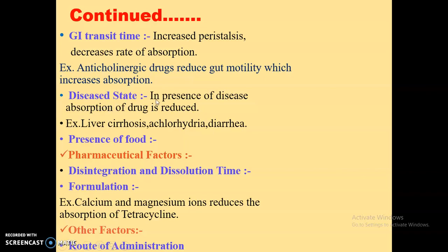Disease state also influences the rate of absorption. In the presence of disease, the absorption of drug is reduced. For example, in cases of liver cirrhosis, achlorhydria, and diarrhea, rate of absorption is slow. Presence of food also influences the rate of absorption — some drugs are absorbed partially on an empty stomach, so such drugs are given before meals. Pharmaceutical factors also affect the rate of absorption, like disintegration and dissolution time. For example, if calcium and magnesium ions are used as excipients in manufacturing of tetracycline tablets, it reduces absorption of tetracycline. Route of administration also influences the rate of absorption — drugs administered by the IV route are absorbed faster as they do not need to cross any biological membrane, whereas drugs given by the oral route are slowly absorbed as they cross a number of biological membranes.